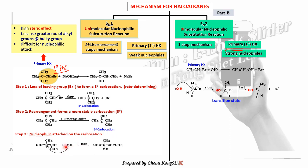Once the tertiary carbocation is formed, nucleophilic attack occurs — the fast step — forming the alcohol. In this case, sodium hydroxide is the nucleophile (strong nucleophile), so there is only one fast step. Compare this to the earlier example with weak nucleophile methanol, where there were two fast steps including deprotonation.